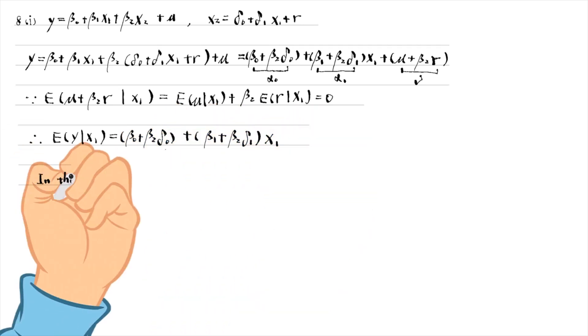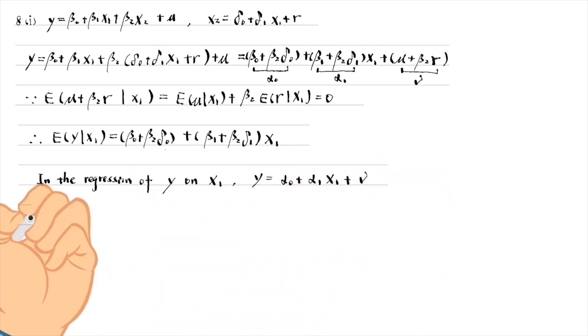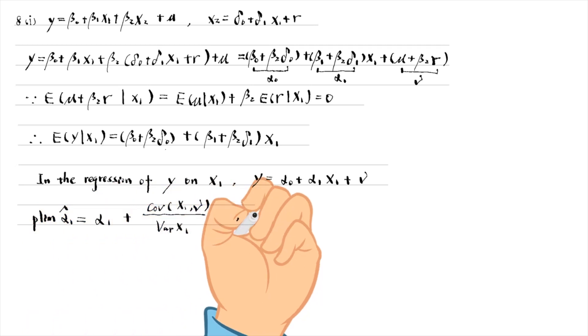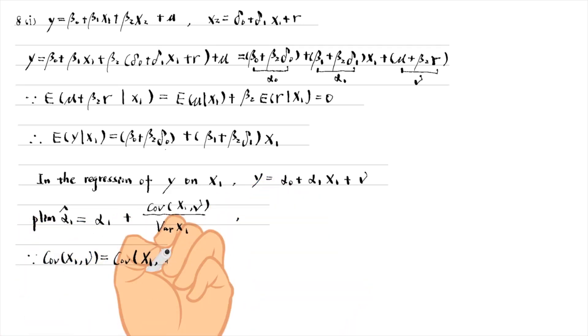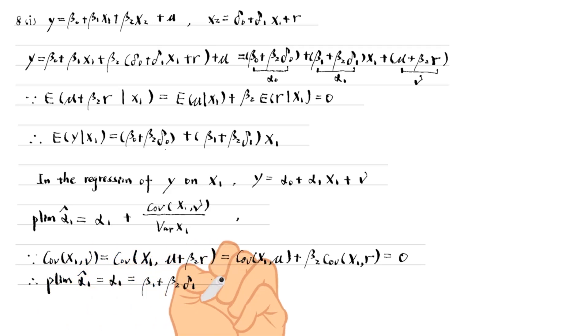In the regression of y on x1, the probability limit of the OLS slope estimator alpha1 hat equals alpha1 plus the ratio of the covariance between x1 and nu and the variance of x1. We can show that the covariance is 0. So the probability limit of alpha1 hat equals alpha1, that is beta1 plus beta2 times delta1.